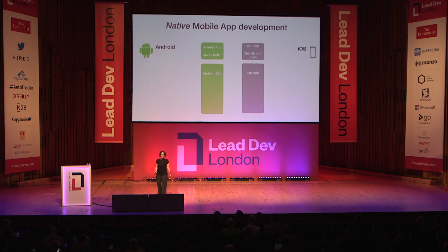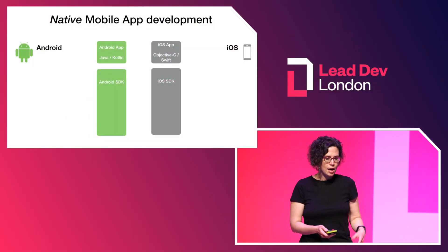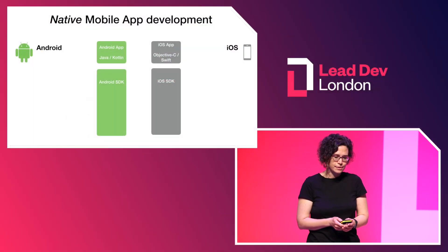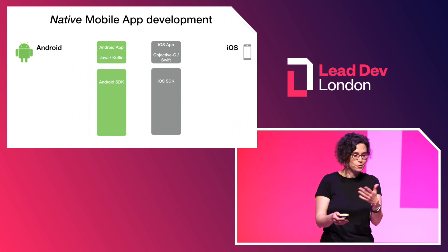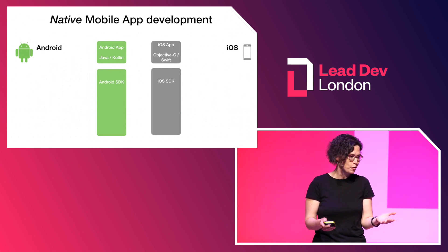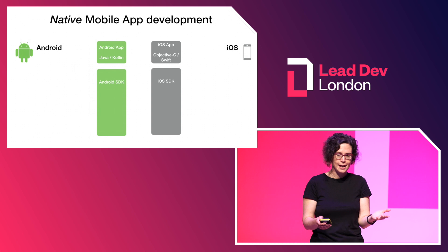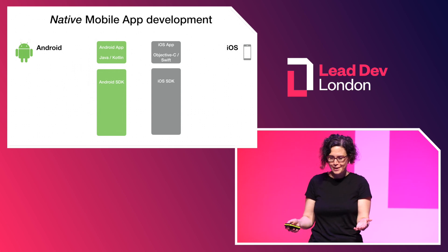We're more than a decade into Android and iOS. Both platforms have grown, and apps are beyond what people originally envisioned them to be. How do we develop apps? The canonical approach — let's also call it the native approach, although the word is highly overloaded — is still worth examining.